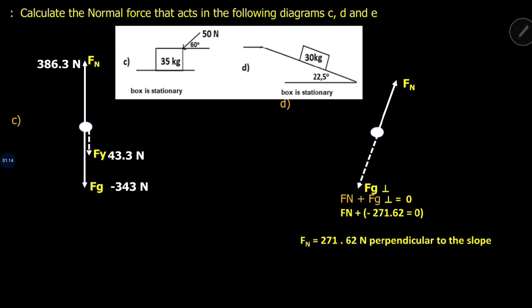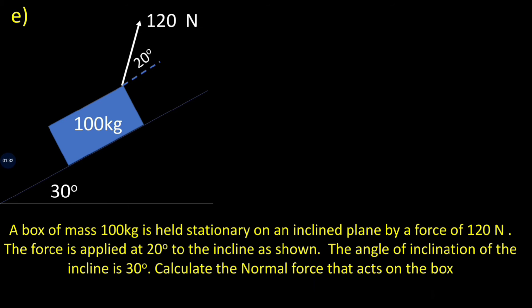It is now time to look at the last question, diagram E. Pause the video, do a calculation, then continue when done. A box of mass 100 kg is held stationary on an inclined plane by a force of 120 Newtons. The force is applied at 20 degrees to the incline, and the angle of inclination is 30 degrees. We want the magnitude of the normal force acting on the box, which we know will be perpendicular to the slope.